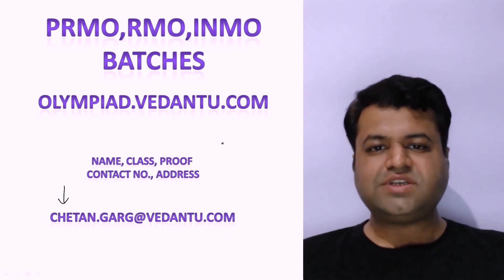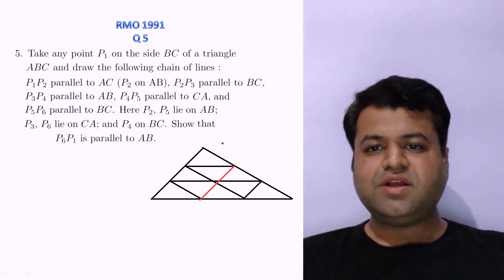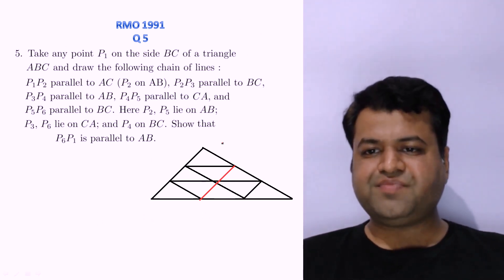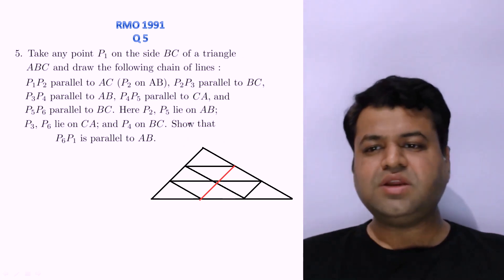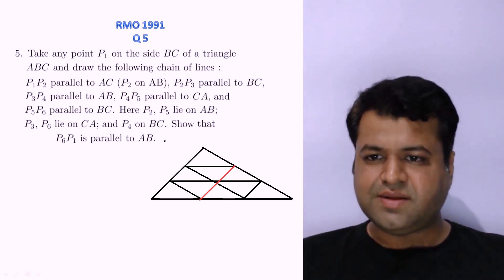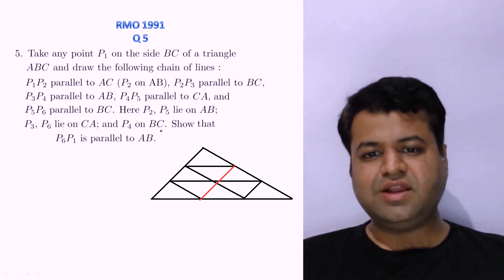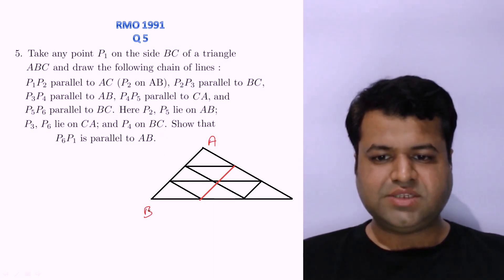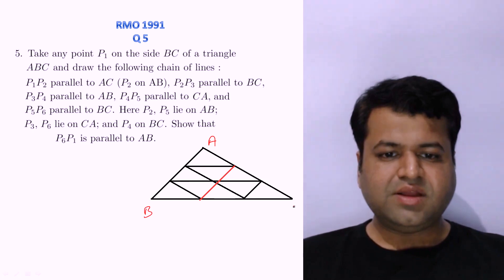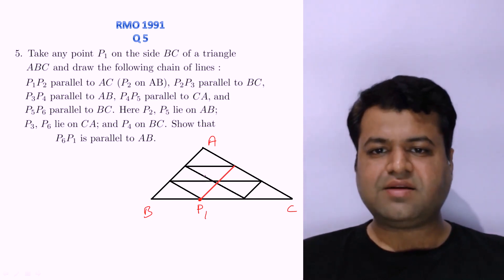So let's start our session with question number 5 of year 1991. This is a question of geometry and it is a pretty simple question. The question says: take any point on the side BC of a triangle ABC. Let's say triangle ABC and let's assume P1 is any point on the side BC of the triangle.